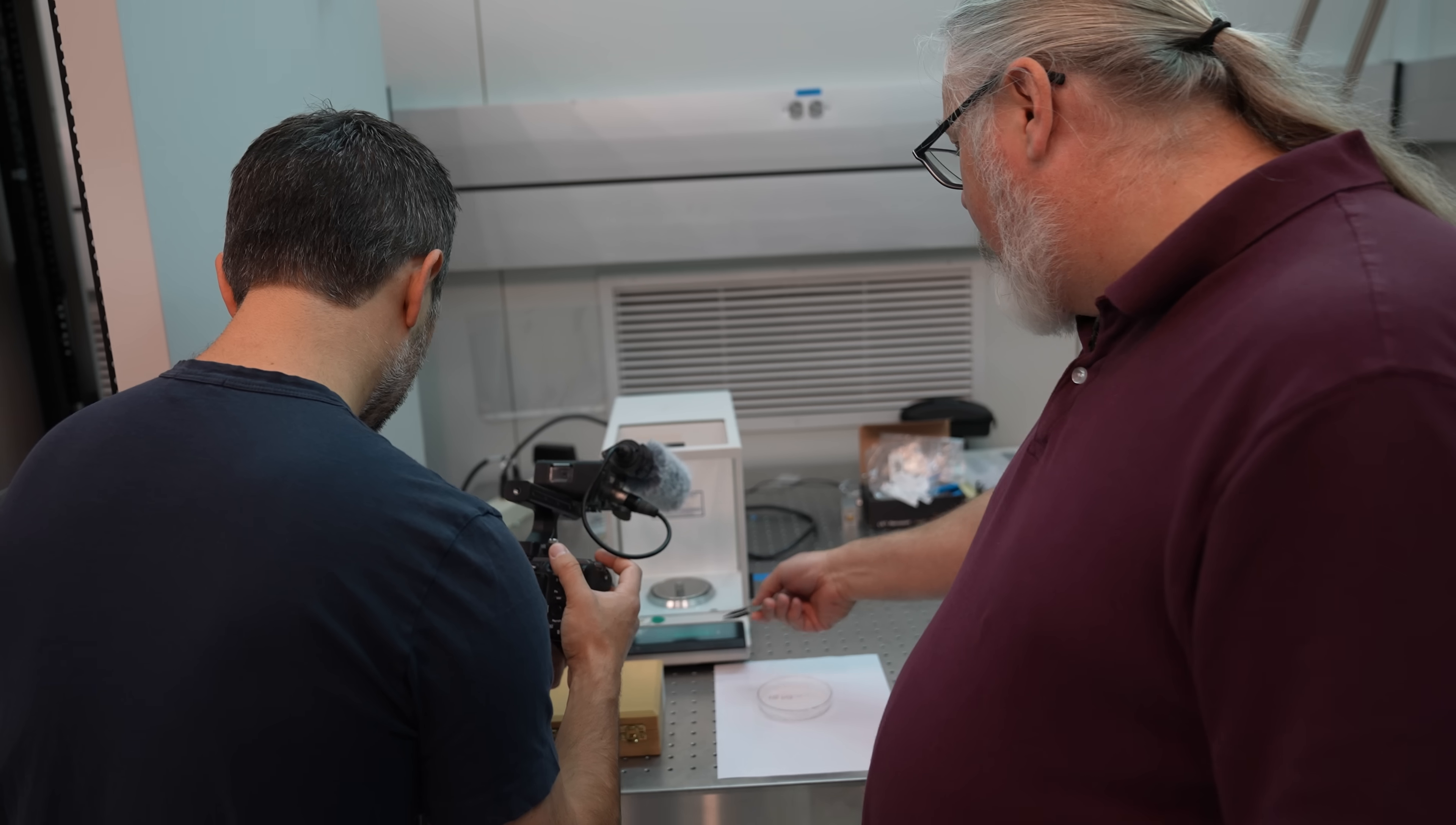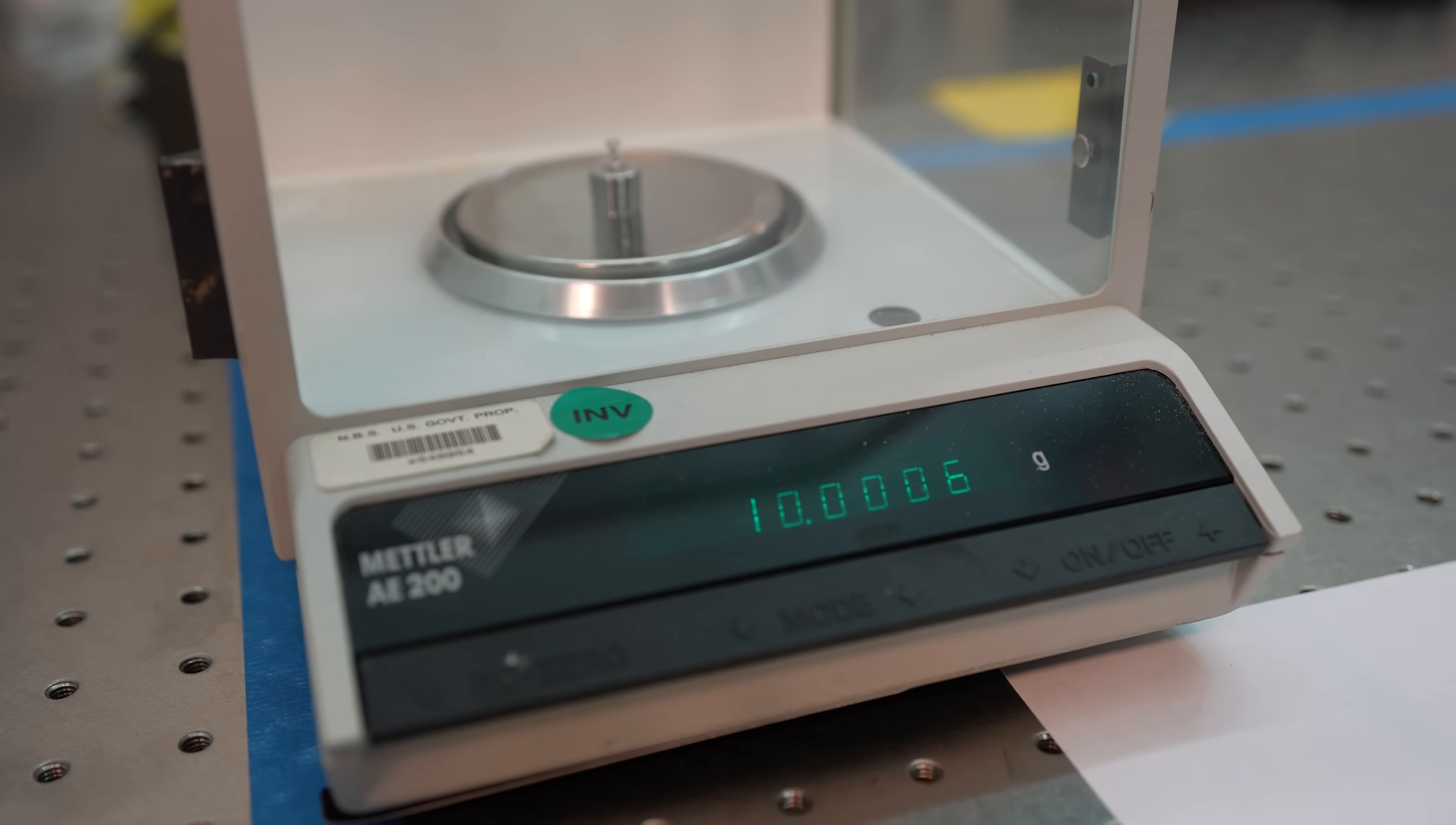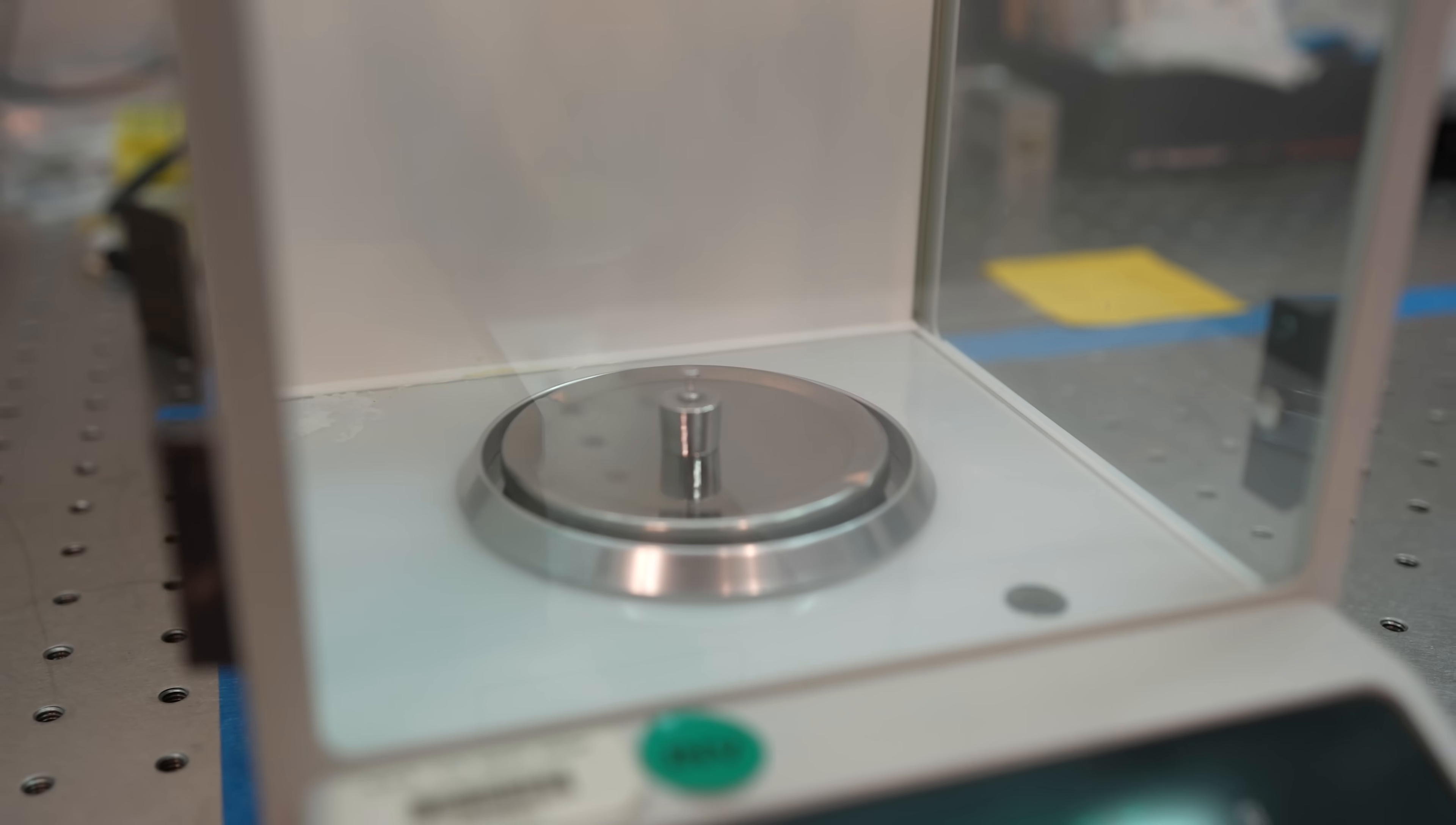And you could look at the scale and say, oh, okay, my scale is reasonably well calibrated here. That last digit might change a little bit. But you could sort of make some statement about whether or not your scale is accurate.